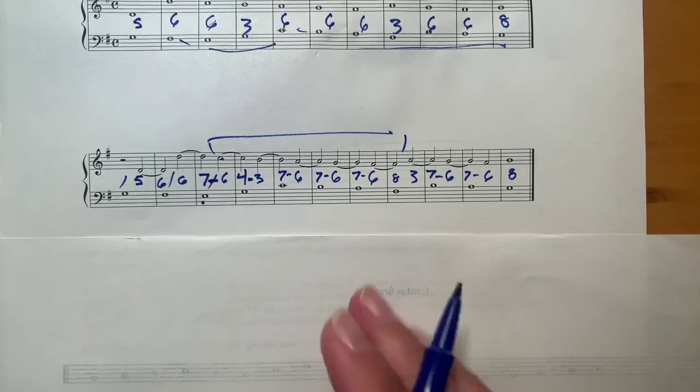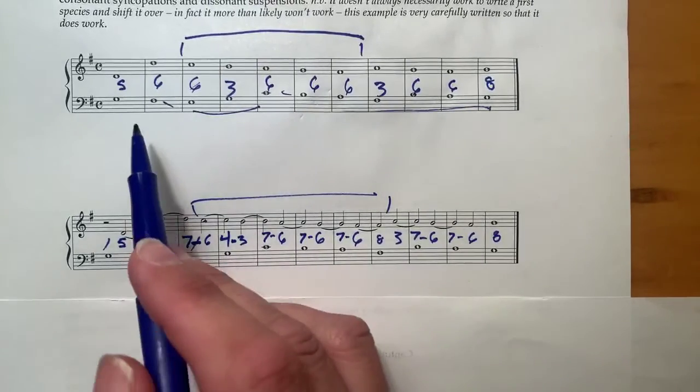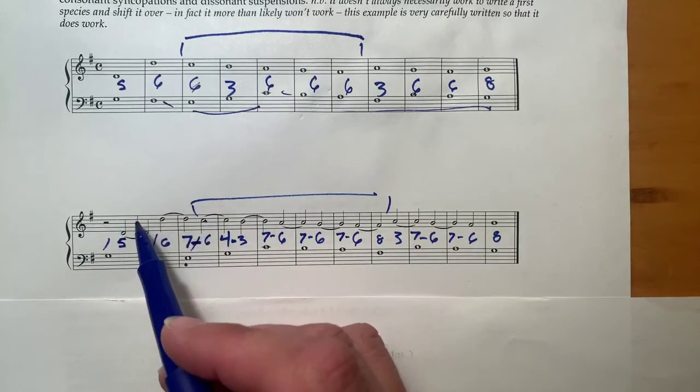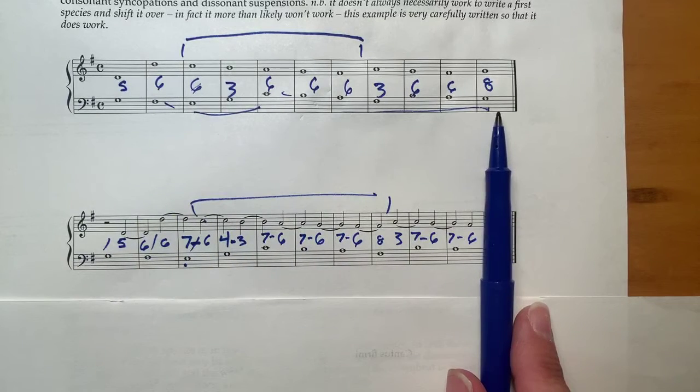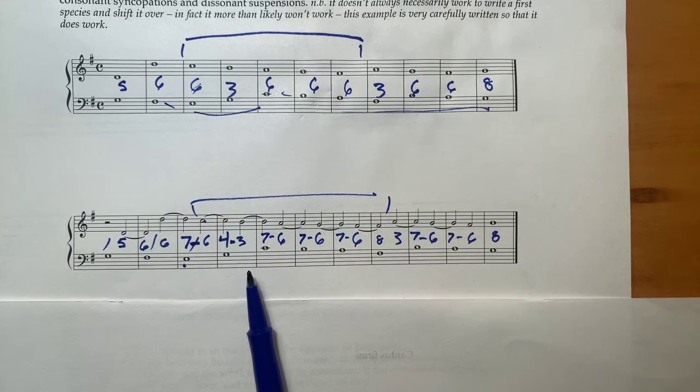I do want to tell you that this may give you a false impression that you can write a first species counterpoint and then just shift it over and you'll automatically have a fourth species counterpoint. That is definitely not true.